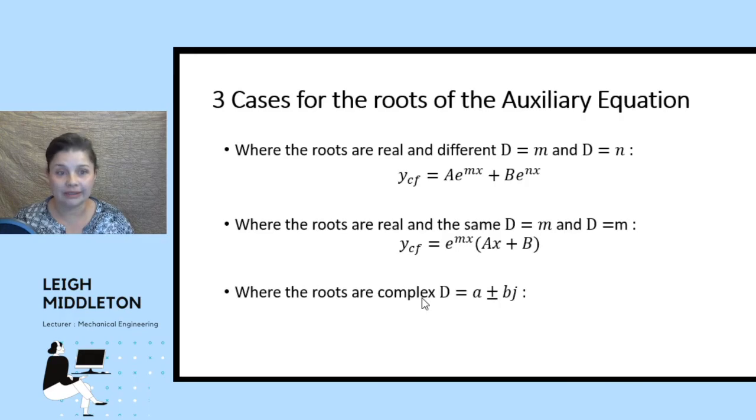Where your roots are complex, and you remember again, complex numbers comes from your first year mathematics. Where you have a being your real part and b being your imaginary part. And your solution would look like this. Where the real part of the root goes into the power of e and the imaginary part goes into the angle of cos and sine.